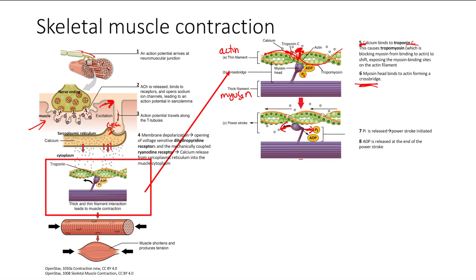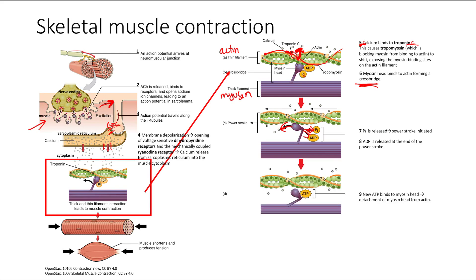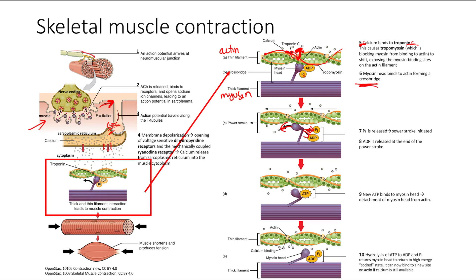When myosin power strokes, at the end of the power stroke it releases ADP. At the very end of the stroke, it's still stuck to the actin. It will finally release the actin when a new ATP binds. The ATP is then hydrolyzed to ADP and phosphate, releasing energy, so the myosin goes to a high-energy cocked state, ready to bind to actin again.